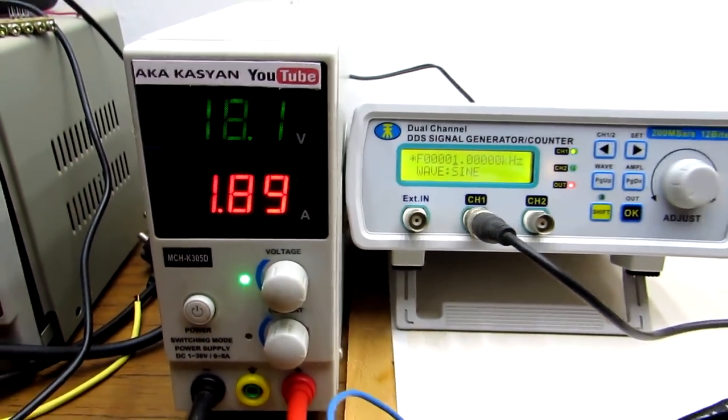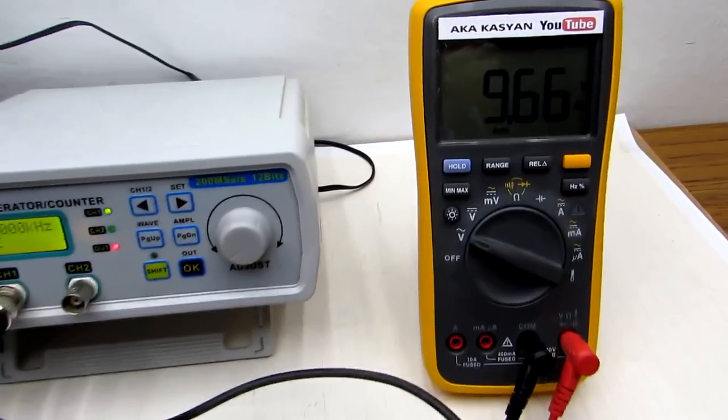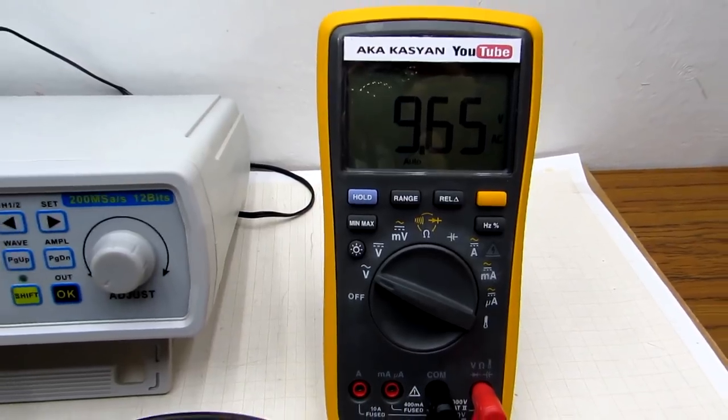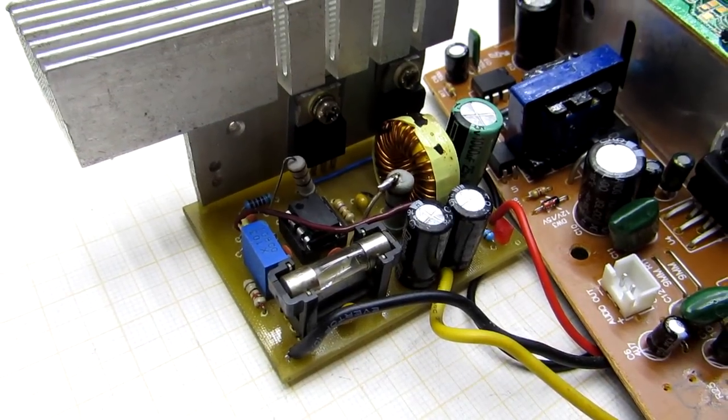And now we raise the supply voltage to 18 volts. The multimeter already shows 9.7 volts, and this is almost 20 watts. This is about 2.5 times more than with an input voltage of 12 volts. After installing the converter, let's compare what was before and what happened after.